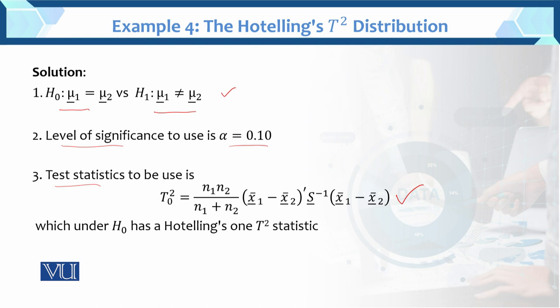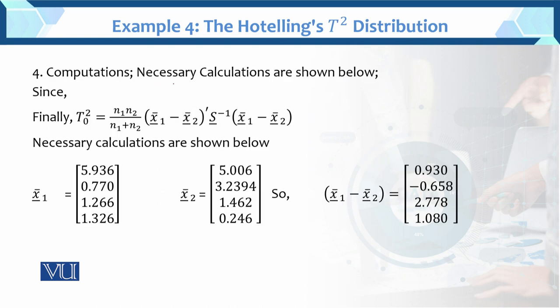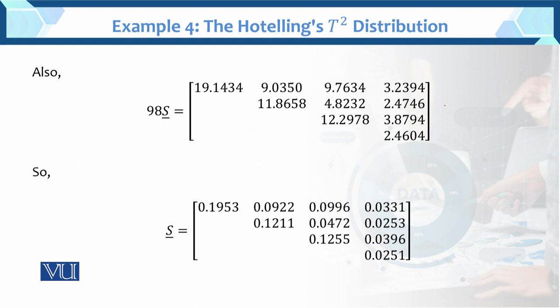Now the fourth step is the calculation. This is the T-square. Now x1 minus x2, this is x1, x2, and this is x1 minus x2. Now the S inverse. This is S. Now S is multiplied by 98 times S, so we need which value? S. So we divide by 98. Finally we calculate and we have the value S.